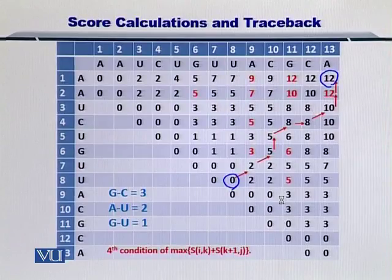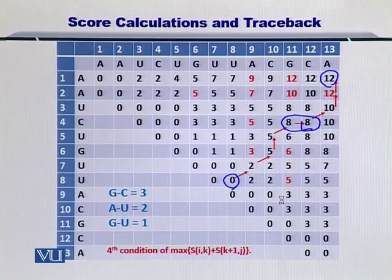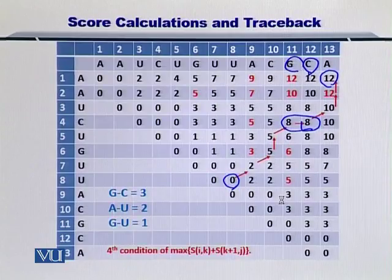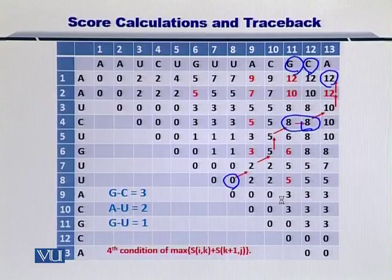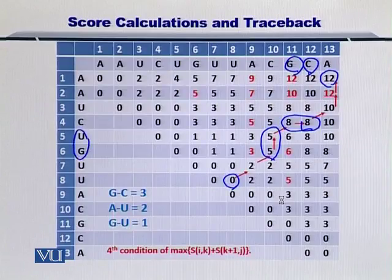Another important thing to note by looking at this matrix is that if the traceback has the same numbers in a single row, then it means that these two nucleotides will actually form a bulge in the RNA secondary structure. Similarly, if you have two scores in the same column, then it means that these two nucleotides will also be forming a bulge.